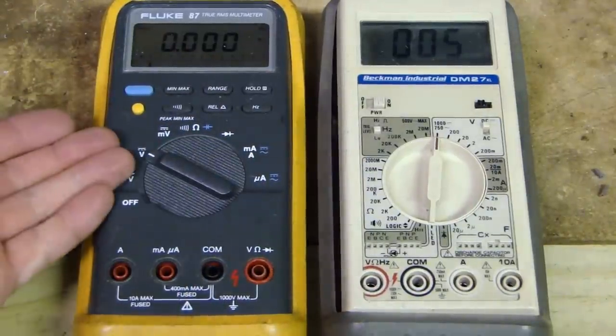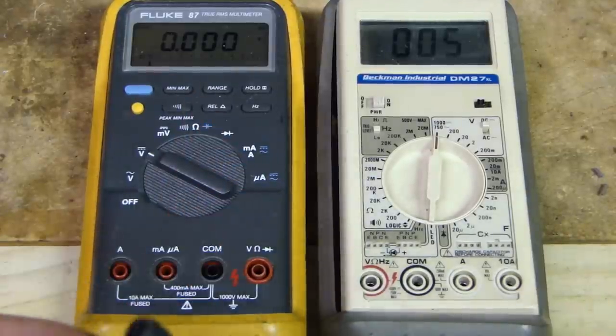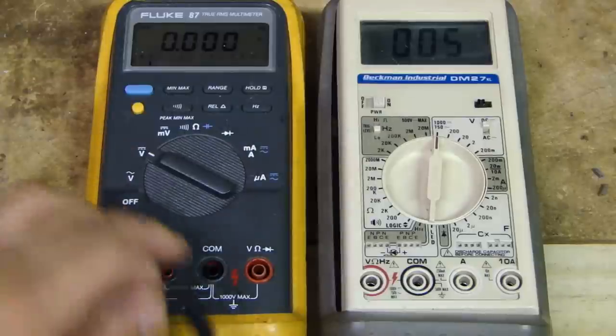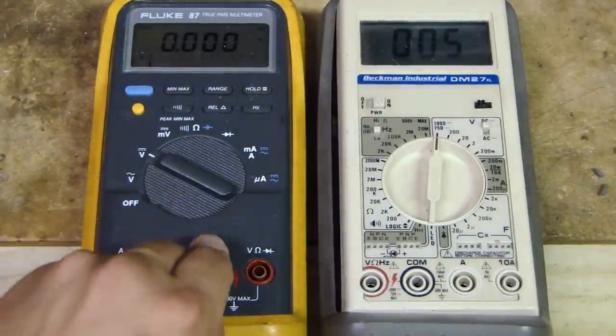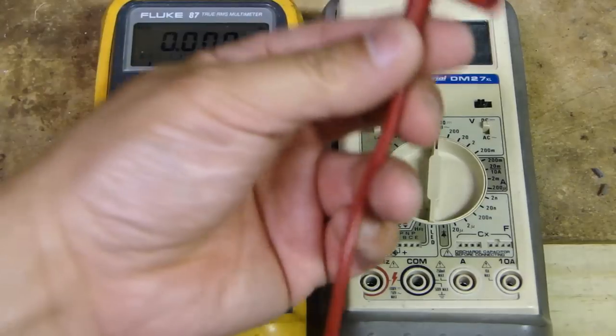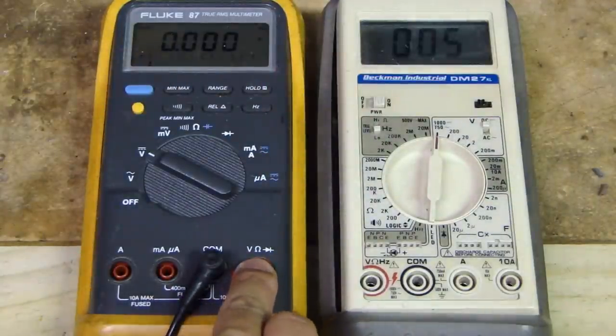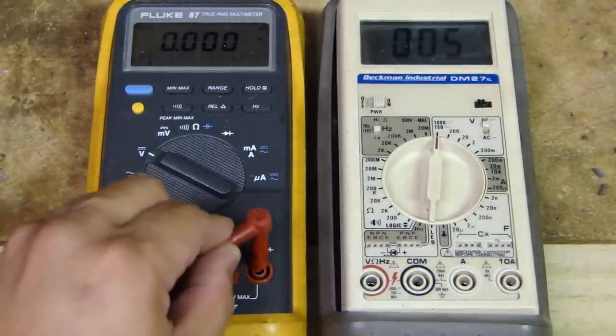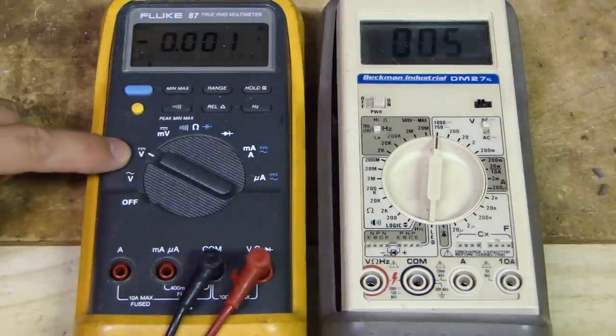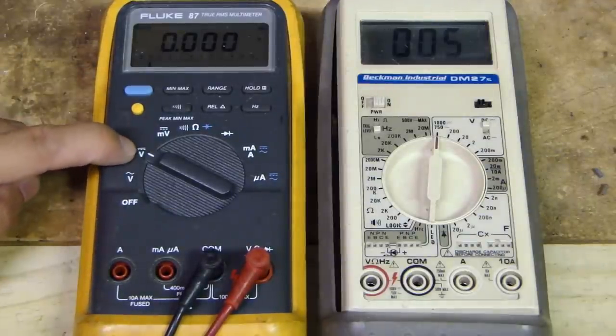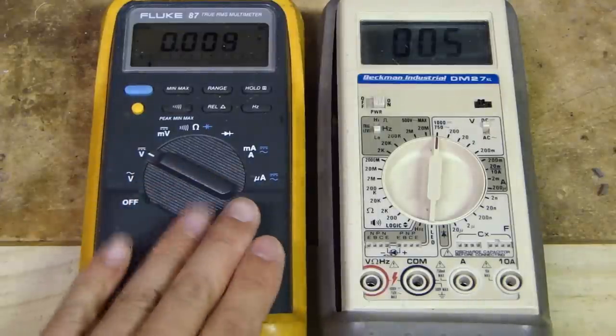So if you want to measure DC voltage, then what you want to do is take your black probe and plug it into common, COM. And then for the positive, take the red probe and plug it into V, V for voltage. Once these are plugged in, and you set this to V with a flat line, flat line represents DC voltage, then this is ready to measure DC voltage.